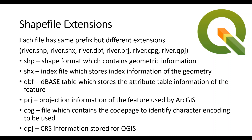A shapefile has several extensions attached to it. The name always begins with a prefix, and the prefix has to be the same, but it has different extensions. For example, we will see river.shp, river.shx, and river.qpj. I will explain all of these extensions.